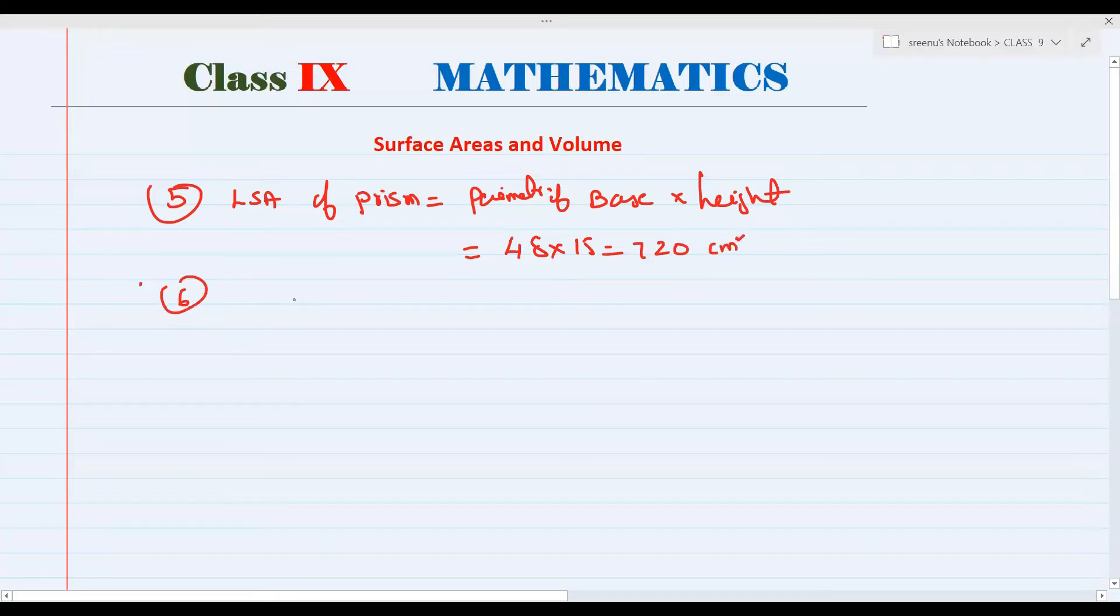And 6 also like that only? What is the perimeter? 6 to sum, just add all the numbers. 60. What is the height here? 40 centimeters. 60 into 40, 2400 centimeters square. Okay? Yes sir.